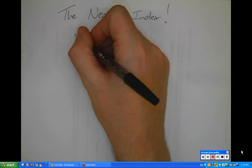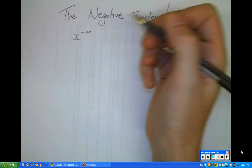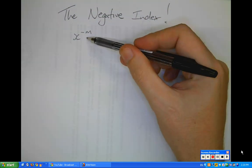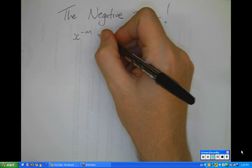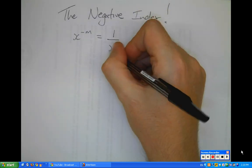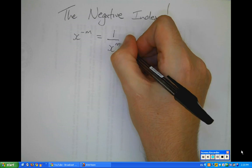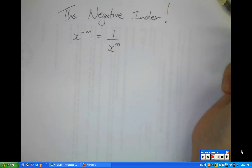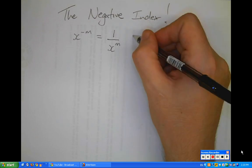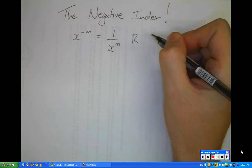So x to the power of minus m would be a negative index. The power here, the index number, has got a negative sign. That is equivalent to 1 over x to the power of m. What do we call something when it's 1 over it? We call it the reciprocal. Good work.